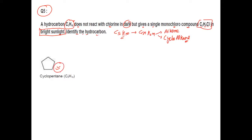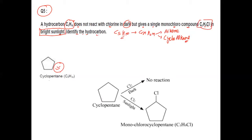show the reaction process. As we saw, it forms a monochloro compound. In dark there is no reaction, but in bright sunlight it gives a monochloro derivative. The answer is cyclopentane.